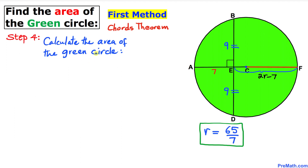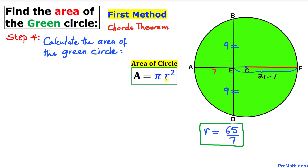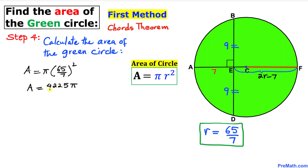Now for the final step: let's calculate the area of this green circle. With radius R equal to 65 divided by 7, we use the area formula A equals pi R squared. So area equals pi times (65/7) squared, which gives us 4225π over 49 square units. Using pi approximately equal to 3.14, the area is approximately 270.75 square units.